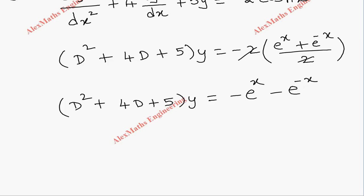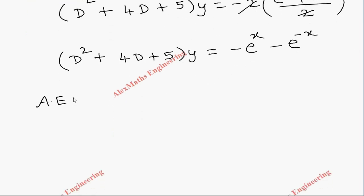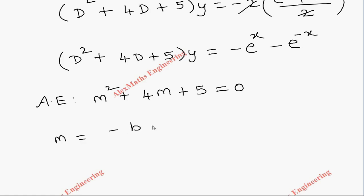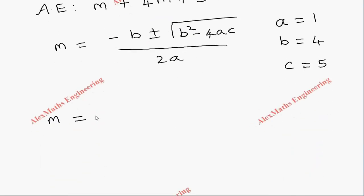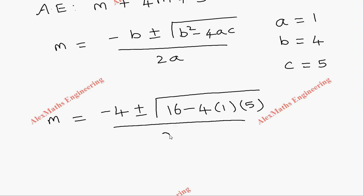As a first step we have to write the auxiliary equation, which is m² + 4m + 5 = 0. The product is 5 and sum is 4; we cannot factorize, so we use the quadratic formula: m = (-b ± √(b² - 4ac)) / 2a. The values are a = 1, b = 4, c = 5. Substituting, we get m = (-4 ± √(16 - 20)) / 2.